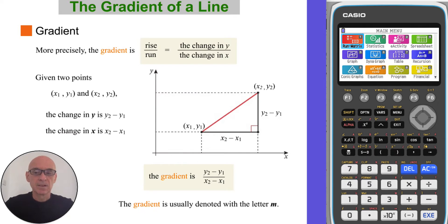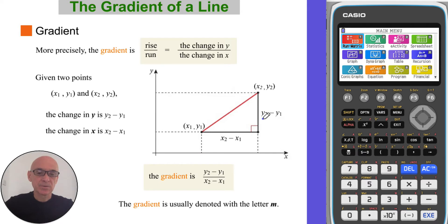More precisely, the gradient is equal to the rise over the run, or the change in y over the change in x. Given two points (x1, y1) and (x2, y2) as shown in the diagram, the rise, or the change in y, is equal to y2 minus y1. And the run, or the change in x, is equal to x2 minus x1.